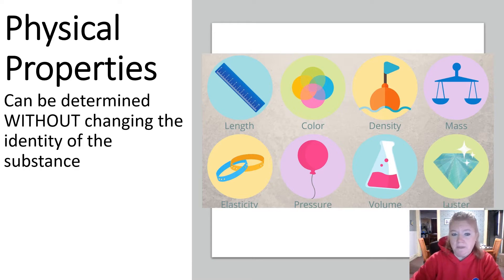So we had physical properties. Physical properties can be determined without changing the identity of the substance. So like boiling point, if you boil water, it's still water. You didn't change its identity.